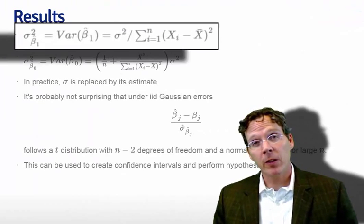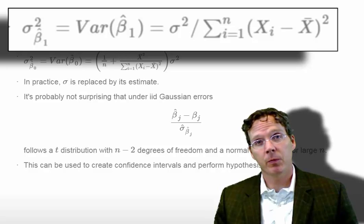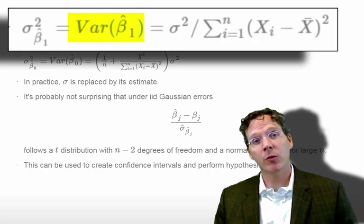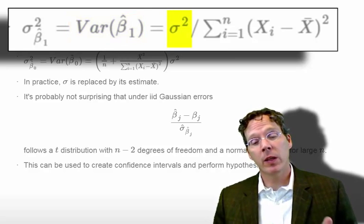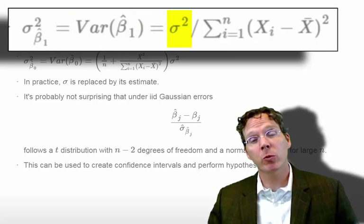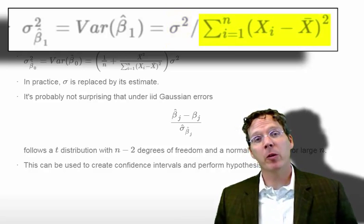So the variance of our regression slope is actually a highly informative formula. This is variance of beta 1 hat, and it involves two things. How variable the points are around the true regression line, sigma squared, and how variable my x's are.